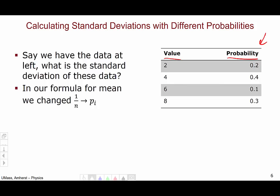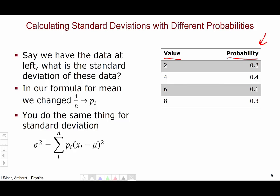Well, in our formula for mean, all we did was we changed the 1 over n to the probability of a given event. You would do the same thing for standard deviation. Instead of multiplying by 1 over n out front, you bring it inside the sum and multiply by the probability.